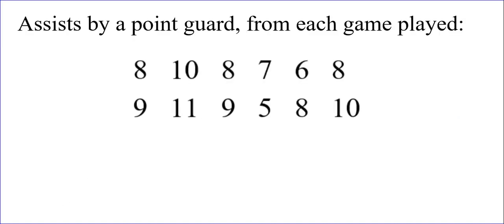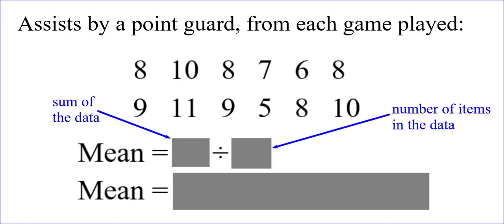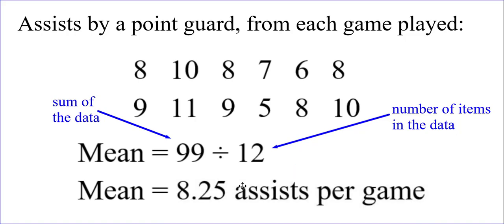For example, assists by a point guard from each game that they played. If we count the numbers that we have here, there are 12 total numbers. So to get the mean, I would take those numbers, add them in my calculator, which gives me 99. I would write that down. And then I would divide by, again, there's 12 numbers if you count. So I'm going to divide by 12. This is the work you would show on paper. And then divide in your calculator, you would get 8.25, and that would be assists per game since that was the context of this problem.